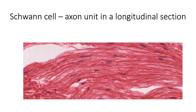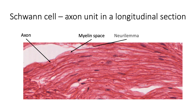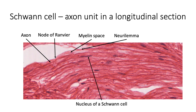Here we are seeing a Schwann cell axon unit in a longitudinal section showing an axon surrounded by myelin space and covered by the neurolemmal sheath. We can also see a node of Ranvier as well as the nucleus of a Schwann cell.